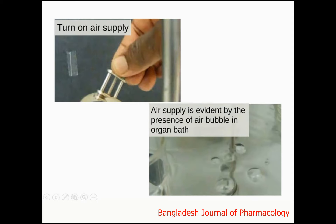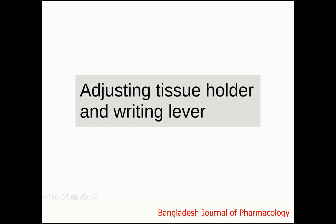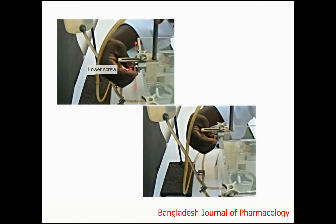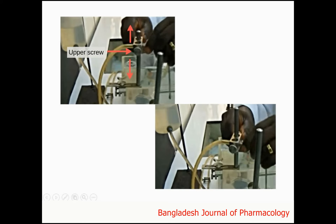Fix the position of the chymograph drum using a knob. Switch on the power button and set the speed of movement of the chymograph drum using the speed control switch. Next, adjust the tissue holder and writing lever using the lower, middle, and upper screws.